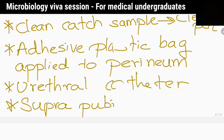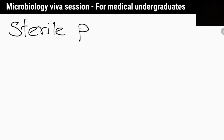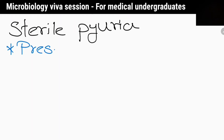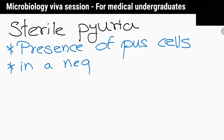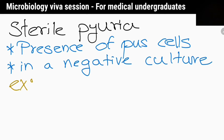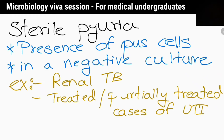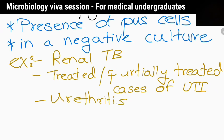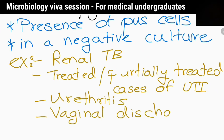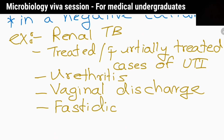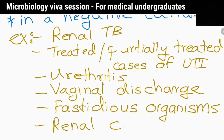Suprapubic approach in severely ill infants who require an urgent sample. What does sterile pyuria mean? Presence of pus cells with a negative culture. Give some examples: renal tuberculosis, treated or partially treated cases of UTI, urethritis, vaginal discharge, fastidious organisms, and renal calculi.